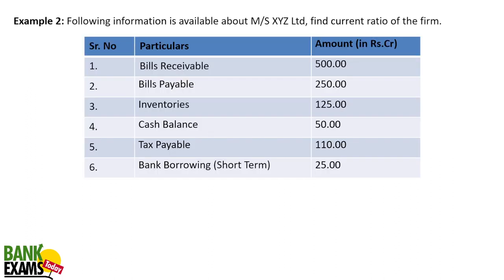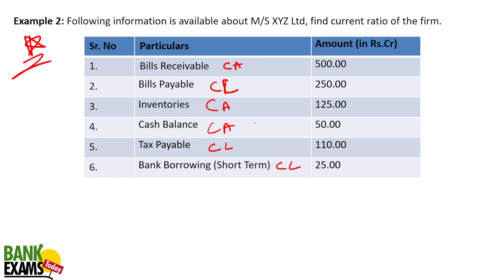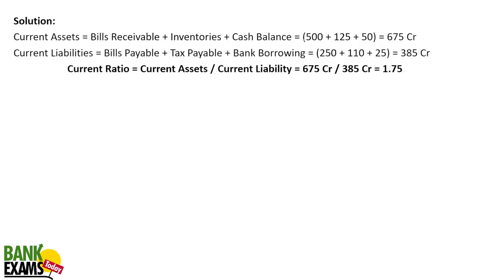Here is a common exam question. Calculate the current ratio given: Bill Receivable (current asset), Inventory (current asset), Cash Balance (current asset), Bill Payable (current liability), Tax Payable (current liability), Bank Borrowing (current liability). Current Assets: 500 + 750 + 675 = 675 crores. Current Liabilities: 380 + 5 = 385 crores. Current Ratio = 675 ÷ 385 = 1.75. This is a good number, close to the ideal ratio of 2.